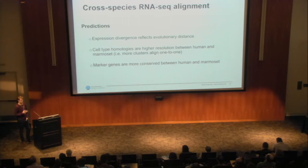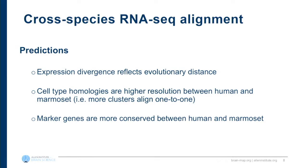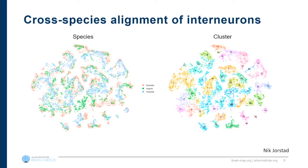I'm going to cover research highlights from the three-species integration of human, marmoset, and mouse. We have tens of thousands of isolated nuclei from each species and are looking for similarities and differences between types. Our initial predictions were that expression divergence will reflect evolutionary distance — marmoset being about half the evolutionary distance to human compared to mouse — that cell type homologies will be at higher resolution between human and marmoset, and that marker genes will be more conserved between human and marmoset.